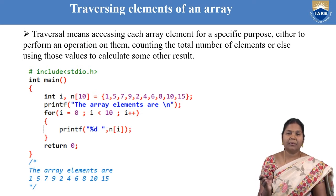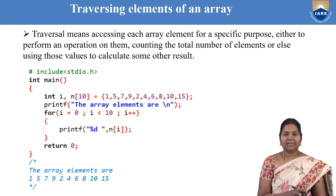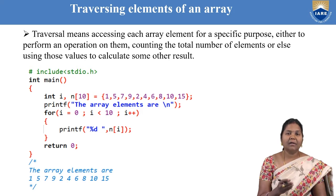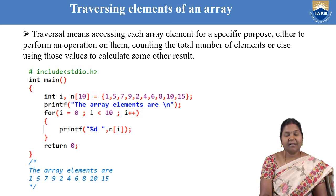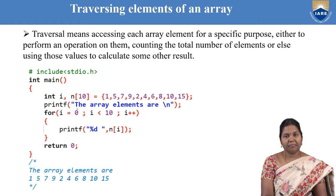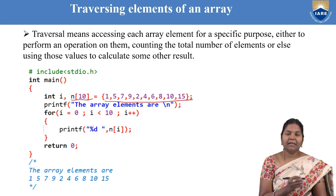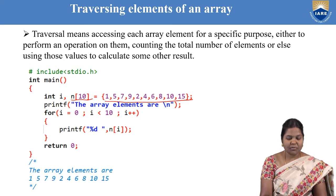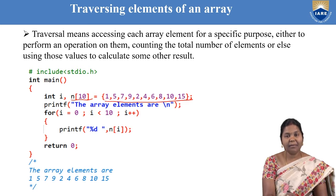For different applications, traversal is required. In traversal, you traverse from a[0] to a[n-1] and display the elements one after the other. You can also count the number of elements present in the array. Traversing is nothing but visiting each and every element of the array. To visit each element, we need a loop. Suppose there are 10 elements in the array — write a loop which will run up to 10 times.